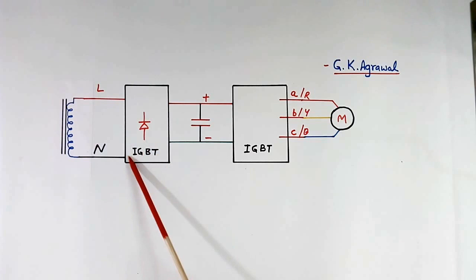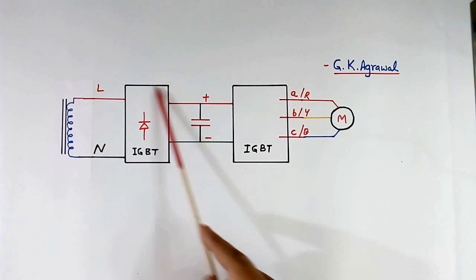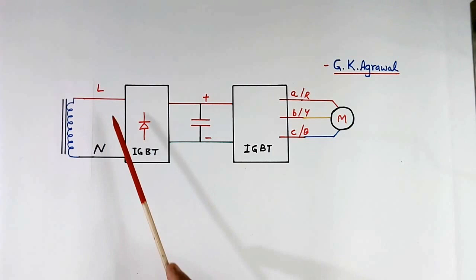This rectifier control is such that we get unity power factor at input of the rectifier. Here we get unity power factor. This is DC line. AC has become DC now. This is capacitor.